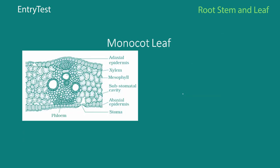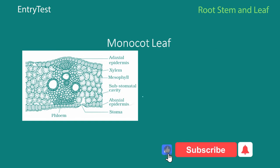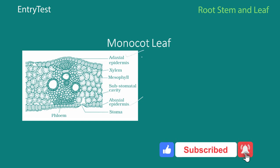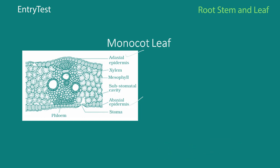The monocot leaf is an isobilateral section. Both the adaxial and abaxial epidermis have stomata — this is one key difference from dicot leaves. Another difference is that the mesophyll is not differentiated into palisade and spongy; there is only one kind of mesophyll.